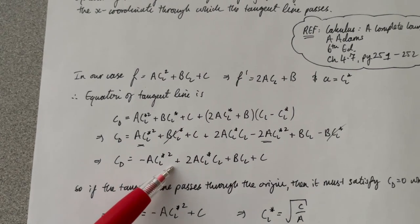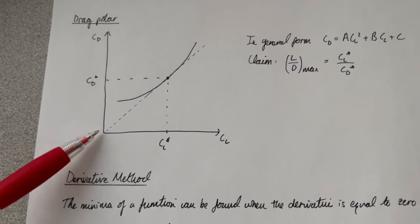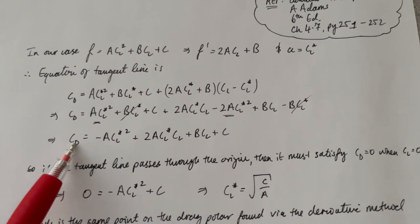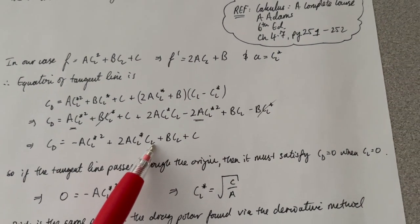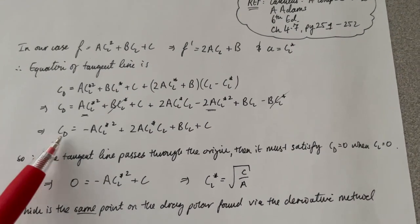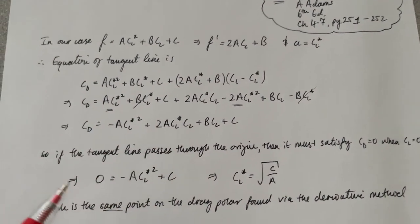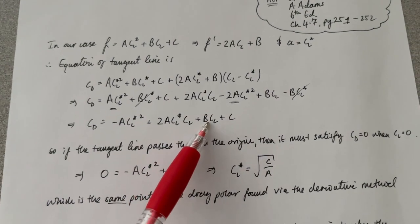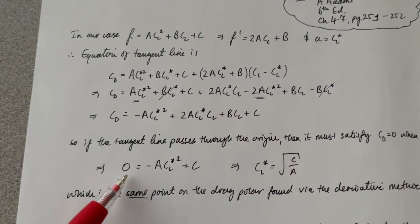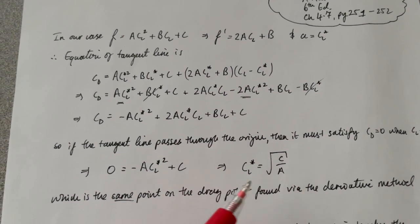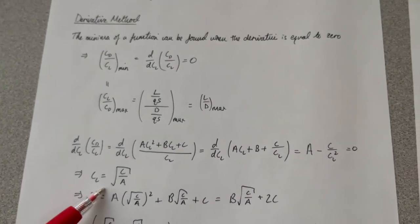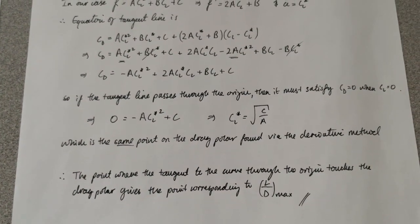We know something special about this tangent line: it passes through the origin. So if we plug in CD = 0 and CL = 0, those terms go to zero and we're left with an equation that, when rearranged for CL*, gives us the square root of C/A — exactly the same result as the derivative method.